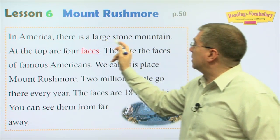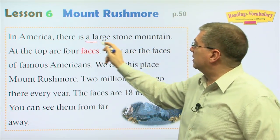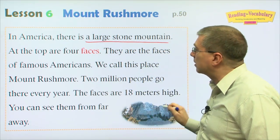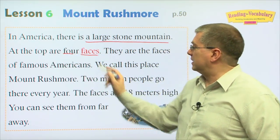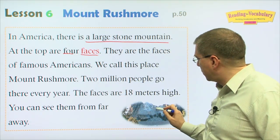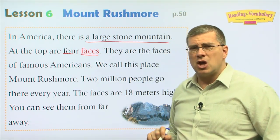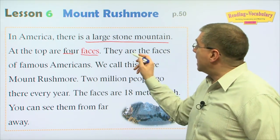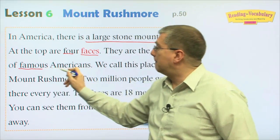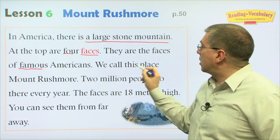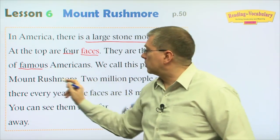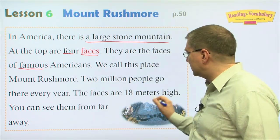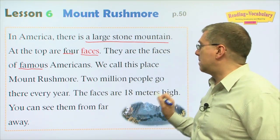In America, there is a large stone mountain. At the top are four faces — one, two, three, four faces. Who are those people? Whose faces are they? They are the faces of famous Americans. We call this place Mount Rushmore, and these are the faces carved into the mountain.